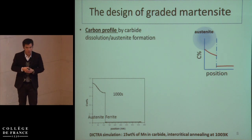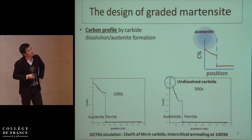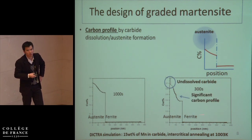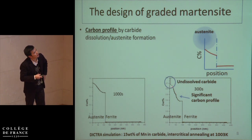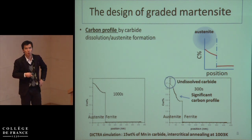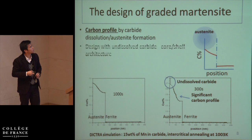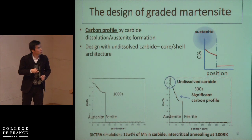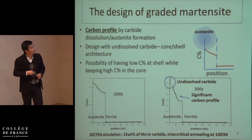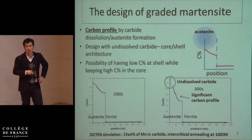It is found that if we keep parts of the carbide undissolved, there exists a very significant carbon profile within austenite. The carbon content in the middle and the carbon content at the interface are much more different — the difference is more than 0.3% carbon — so the room to play with is much larger. Then we propose to design with undissolved carbide within the martensite: a core-shell architecture. There might be a possibility of having low carbon content at the shell at the interface but keeping a high carbon content in the middle.